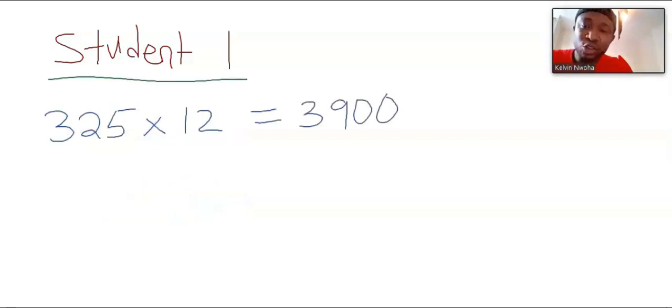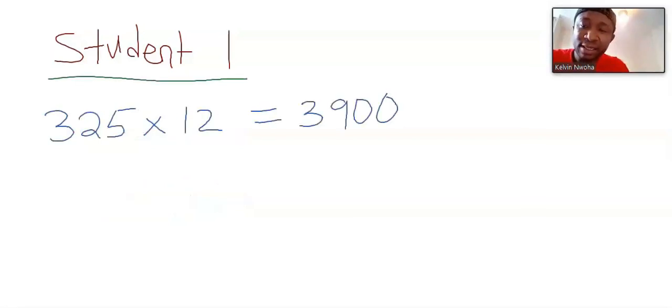Let us see what they did. Student 1 just multiplied 325 by 12 and got the answer. However, did not answer the question. Hence, failed. No grade for it.